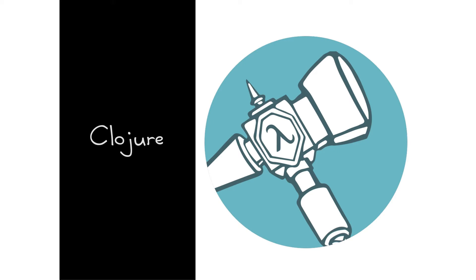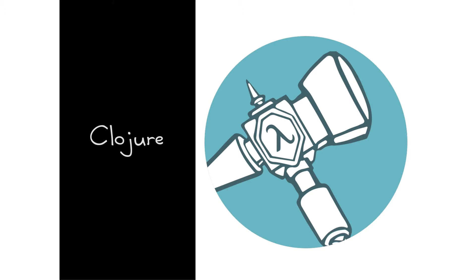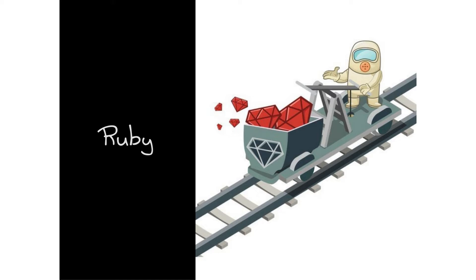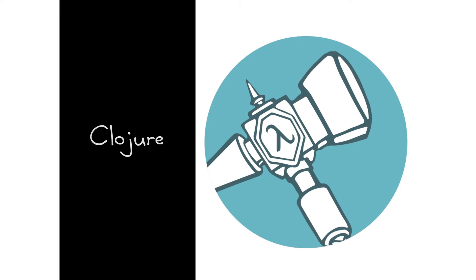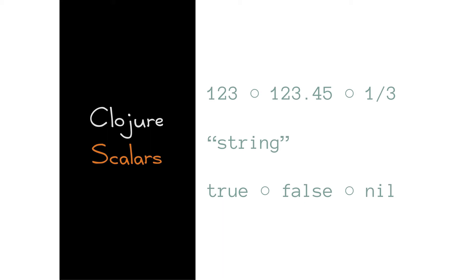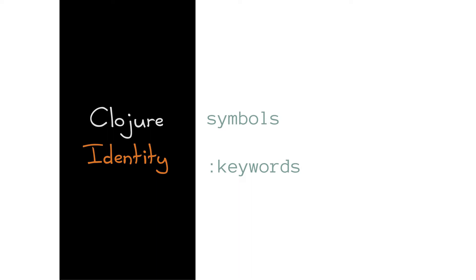So we're going to look at some code. I know this is a Ruby conference, but because it is a Ruby conference, as Ruby developers you will understand Clojure. These are Clojure scalars: numbers, strings, booleans, nil — just like in Ruby, no difference. Clojure has an idea of identity, actually two different systems for identity, just like Ruby. The trick is that Matz switched the names for some reason — in Ruby, symbols are keywords and keywords are symbols, unlike pretty much every other programming language.